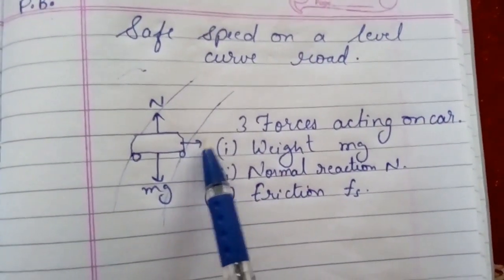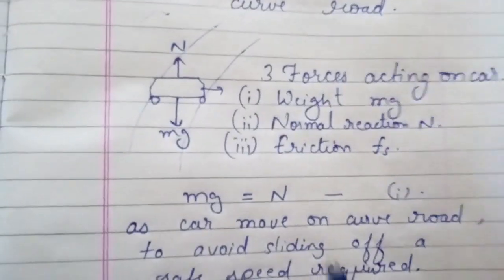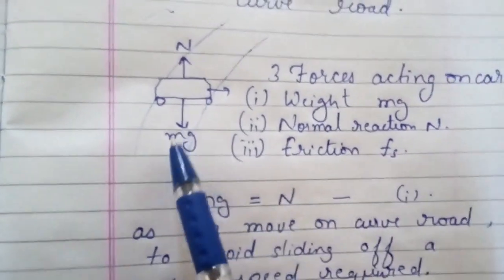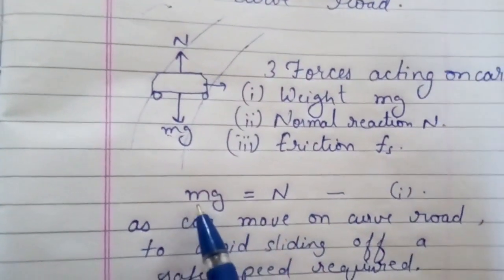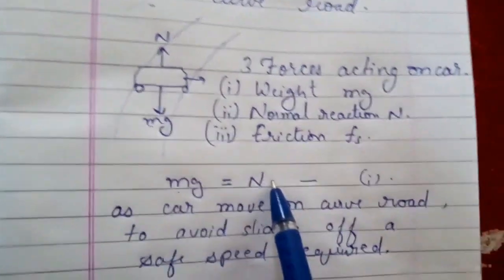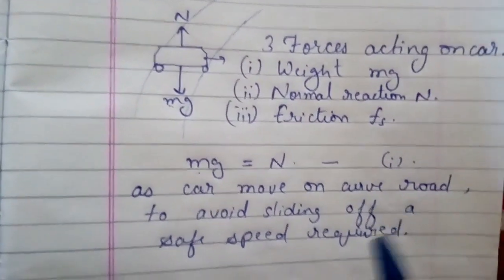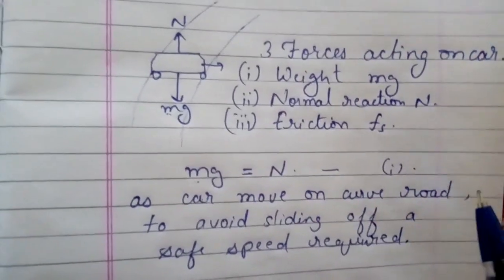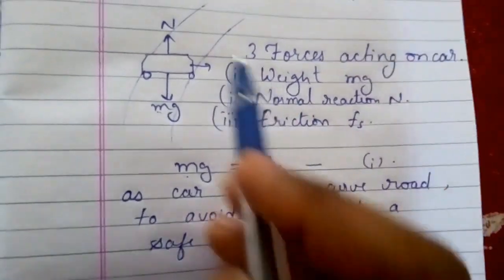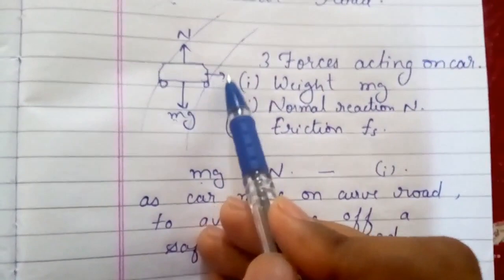Third one is force of friction which is along the road and towards the center of the curve. We can see the weight is balanced by the normal reaction, so we write mg equals N. As the car moves on a curved road to avoid sliding off, a safe speed is required, and this safe speed is provided by the unbalanced force which is force of friction.